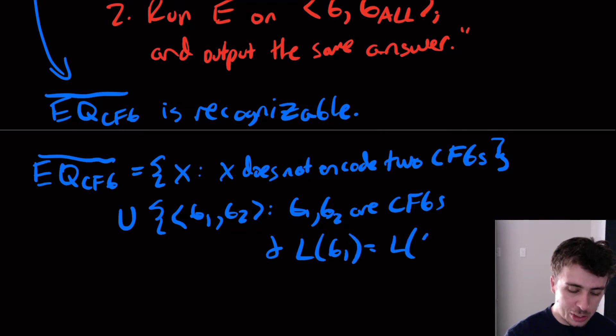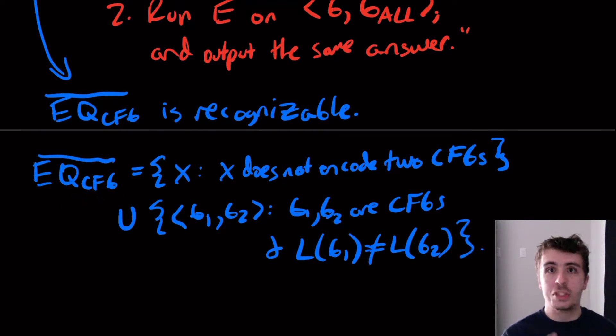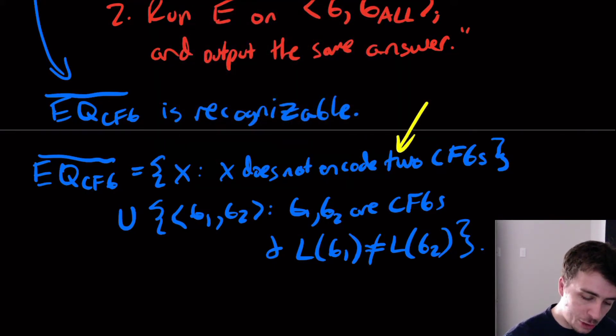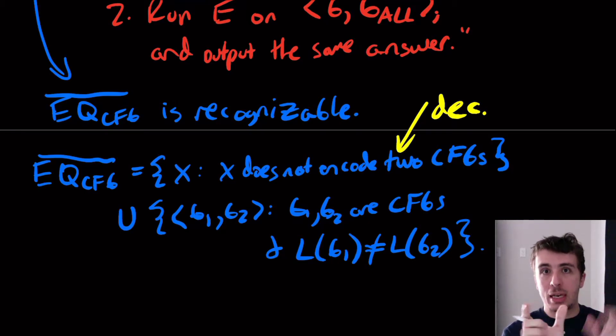This is just something to keep in mind whenever you're talking about the complement of a language that encodes things. You got to include all the strings that don't encode two CFGs, or don't encode the thing that you're interested in. I claim that the first guy is decidable, because the procedure of checking whether the input actually encodes a CFG is decidable, and decidable languages are closed under complement.